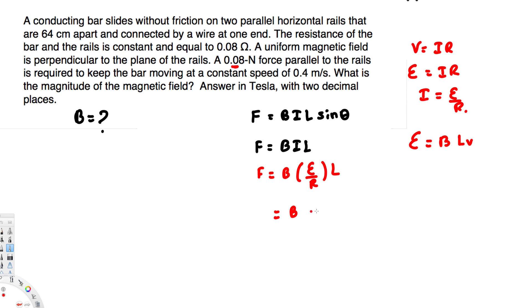Now let's replace this emf with this one. So this is going to become B times BLv over R. And also this v represents the velocity. And if we simplify this one, that's going to give us B²L²v/R. Since we are trying to find the B, let's rearrange this equation. If we rearrange, this whole thing is equal to F.